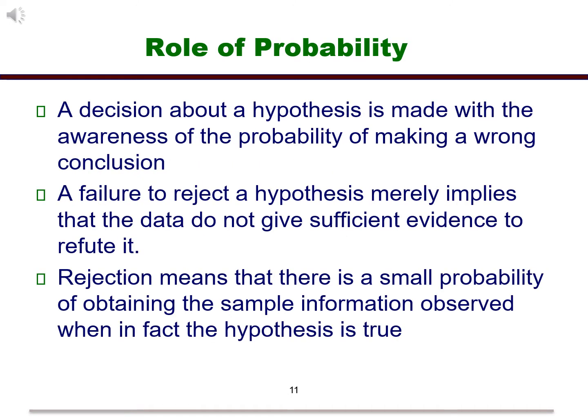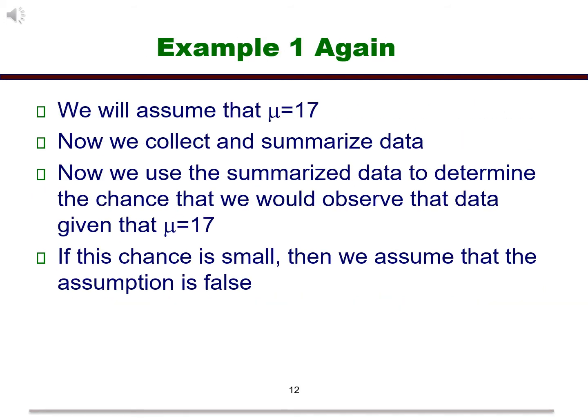Well, we will accomplish this by collecting data and then using a probability. This is the probability that we will make the wrong decision. The decision not to reject does not imply acceptance, only that there is insufficient evidence to reject it. Rejection means that there is a small probability of obtaining the sample information that we observed when, in fact, the hypothesis is true. Now, let's flesh this out with a homework example. We will first assume that the assumption of the mean equal to 17 is correct. Next, we will collect data on the amount of time spent on homework from a sample of college students. Finally, based on the data that we collected, we will determine the probability that we would have observed the sample data that we did, given that the assumption is true. If this probability is small, then we will conclude that the assumption is false.